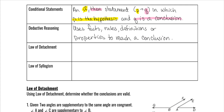What that means is you have to use real things to prove something is true. You can't just say 'my sister's stupid.' You could say, if she scores really low on an IQ test, that she is unintelligent — but you have to have proof. It has to be facts, rules, definitions, or properties.